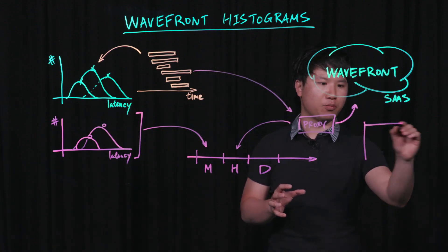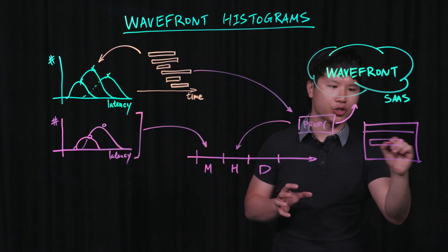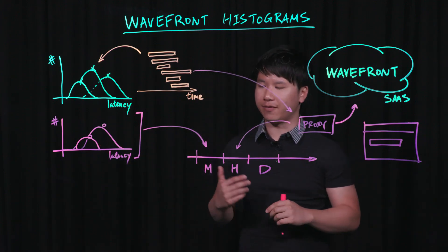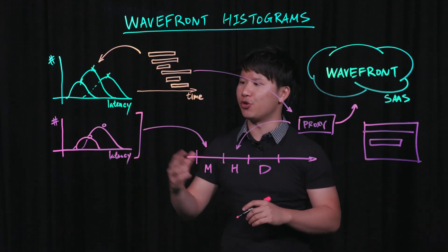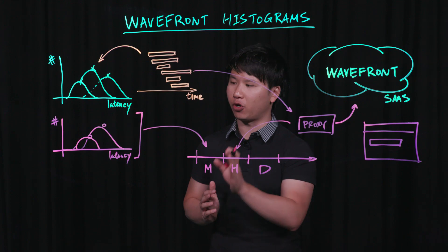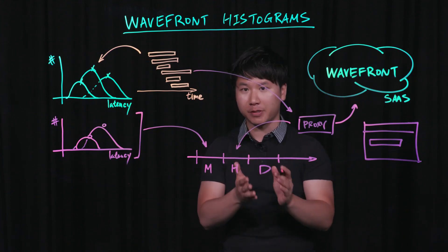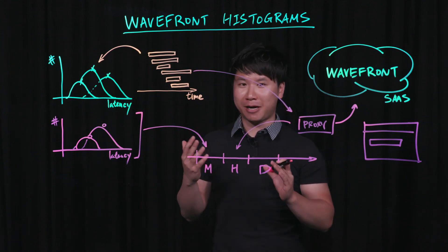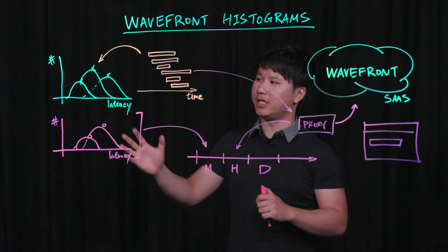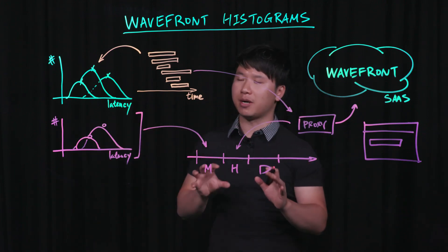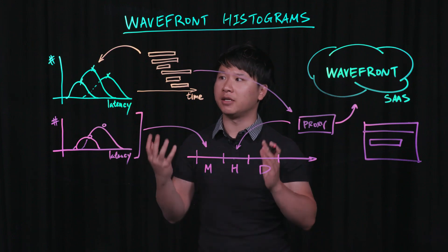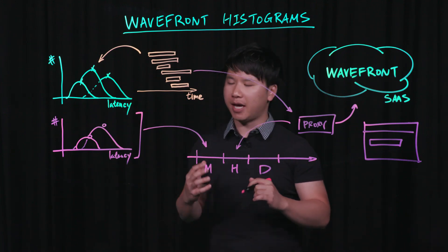You might have played with Wavefront a little bit — it allows you to very quickly, using our query language, question the monitoring data you have and produce insights. Some of the functions we have for supporting histograms include computing percentiles. You could ask, for this particular histogram metric, what is its latency at the 95th percentile for a particular minute bin, hour bin, or day bin. You could also combine these histograms together — instead of pre-computing all percentiles, you could send the raw histograms to Wavefront and we combine them on the fly on the server. This is where Wavefront really shines in solving that problem of computing the proper P95.